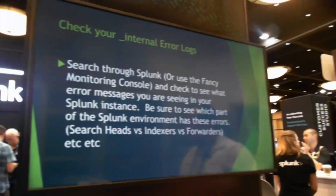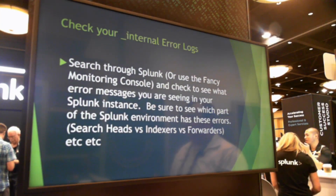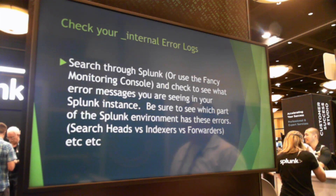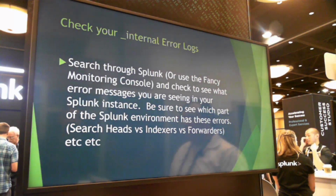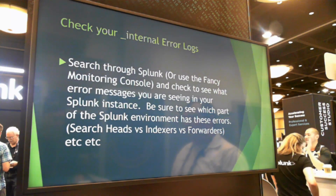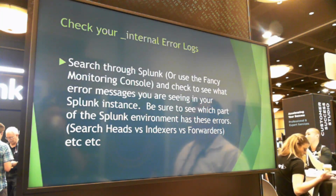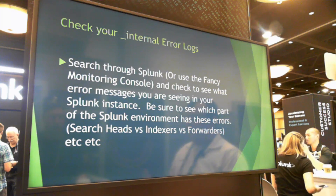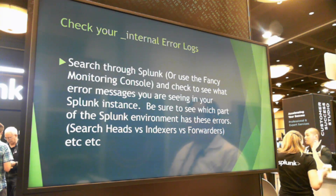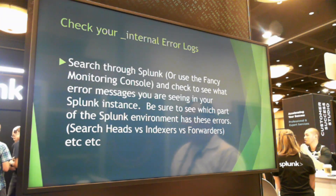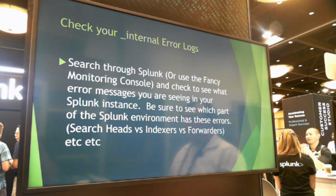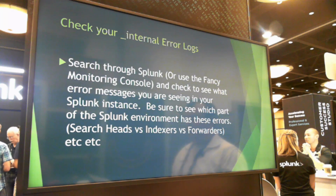Again, a basic step — check your internal error logs. I know it sounds crazy, but a lot of people don't think about just doing 'index=_internal' and then 'error' and seeing all the errors come up. The Monitoring Console also lists out all the error logs it's seeing in Splunk. You can hit your high points and start digging into what that error message means — look online, check Splunk Answers, go to Slack if you don't know. Also make sure whether the error is coming from your search head, your indexer, or your forwarders — because the error message will mean different things for each system.